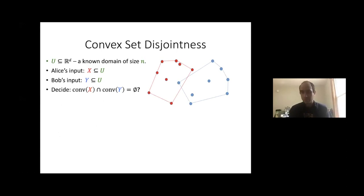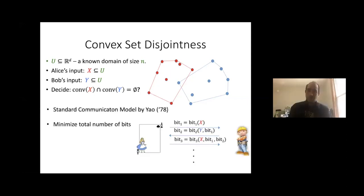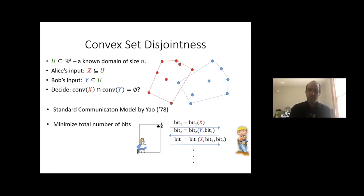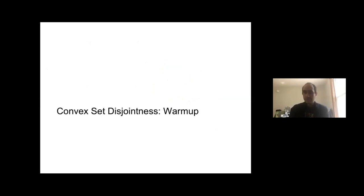Equivalently, they decide whether there is a hyperplane separating Alice's points from Bob's points. The communication model is the standard one by Yao, and the goal is to minimize the total number of bits sent. In each round, each player sends bits to the other player, depending on the history and their inputs. We mostly focus on communication complexity, but we also care about the computational complexity of each player's algorithm.